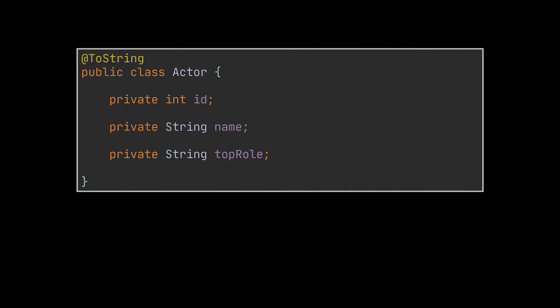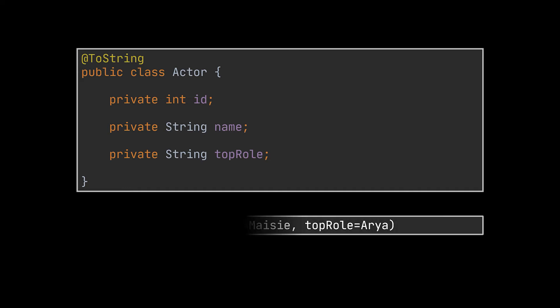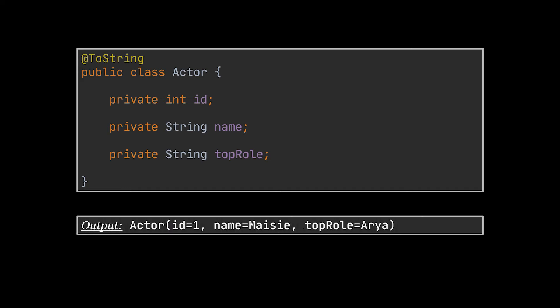The next annotation is @ToString. This one, as you guessed, will generate the toString method for the class annotated with it. In this example we are generating a toString method for the actor class. You can see how the default output of the generated toString method will look. Lombok also provides customization options for this method — one of them is removing the field name from the output by setting the includeFieldNames argument to false.